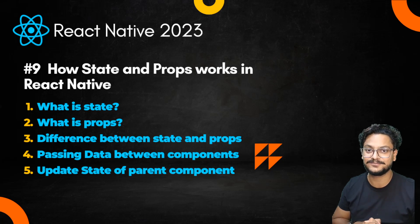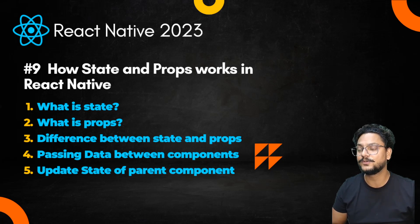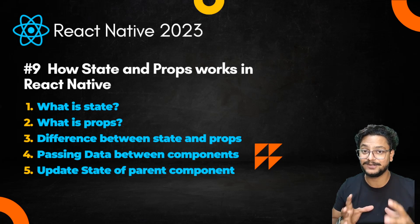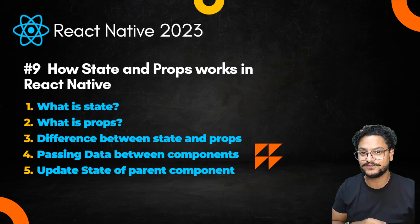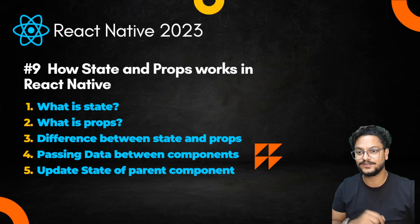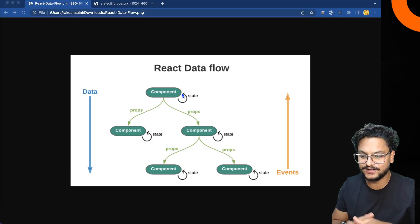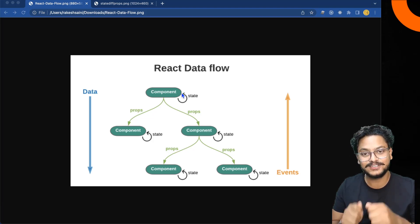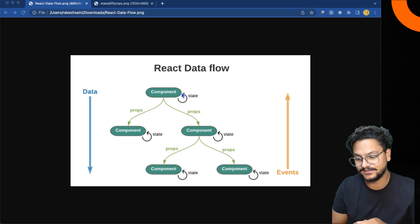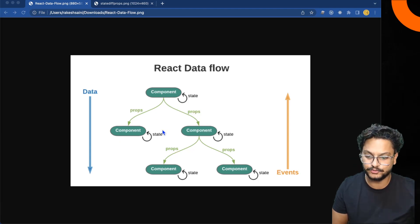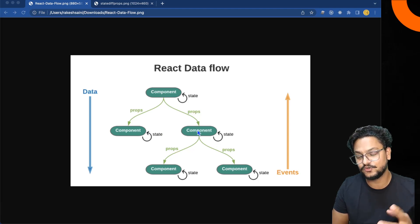So state is something I want to explain using an image, so it will be easy and you will remember it for a longer time. This image will explain what state and props are, and how the data and events will flow. We have a couple of components here: one parent component and two child components, and one of those child components has two more child components.